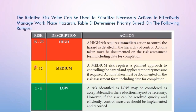If the risk value is from 5 to 12, it falls under medium risk, which requires a planned approach to control the hazard and application of temporary control measures. Actions taken must be documented on the risk assessment, including the date for completion. If the risk value is 15 to 25, it is considered high risk and requires immediate action. All actions taken must be documented and responsible individuals must follow up until the risk is fully controlled, including the date of completion.